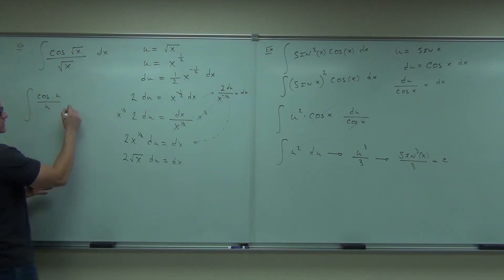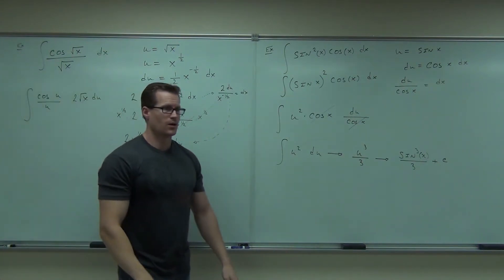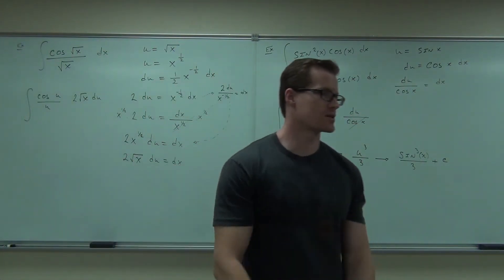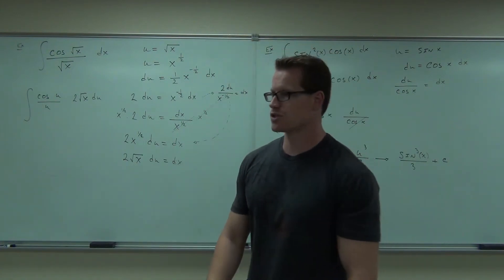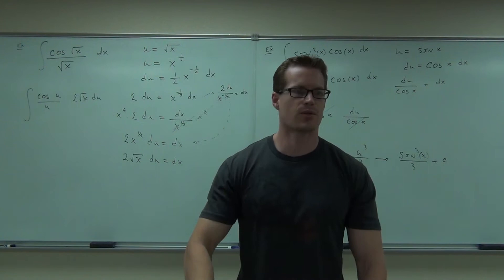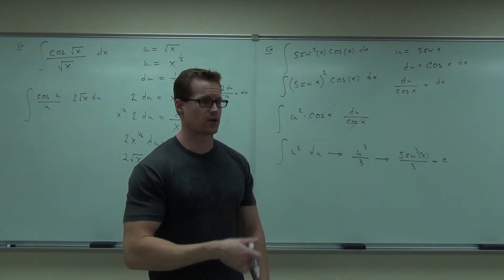But this would not be du. It would be 2 root x du. Is there a place to get rid of the x? What's the one necessity for substitution to work? You've got to have just u's, and it has to fit your integration table. Otherwise, you did something wrong or you haven't gone far enough.